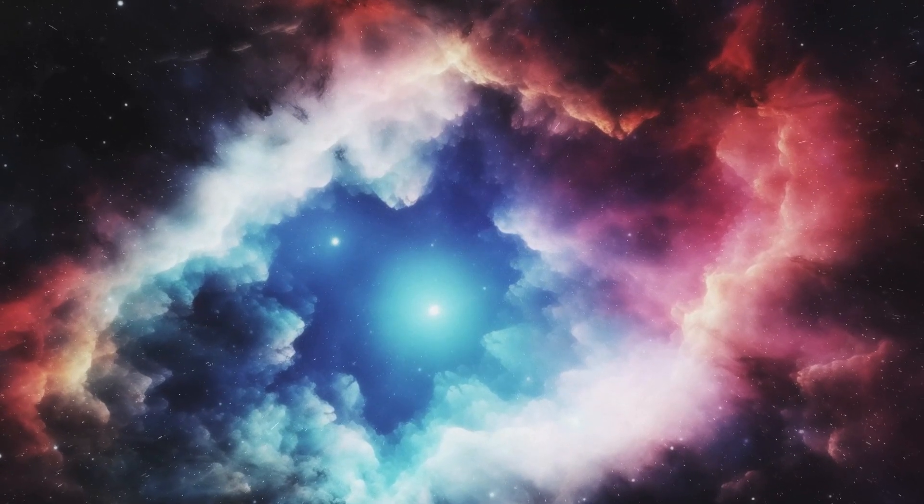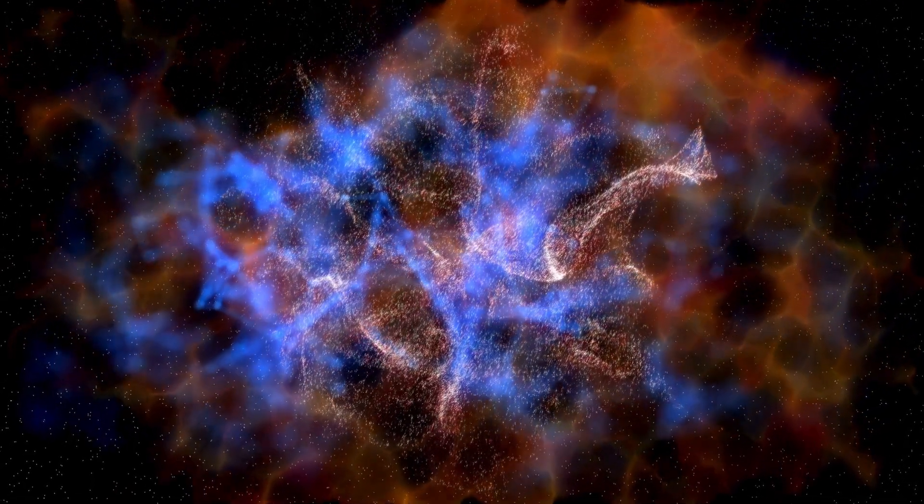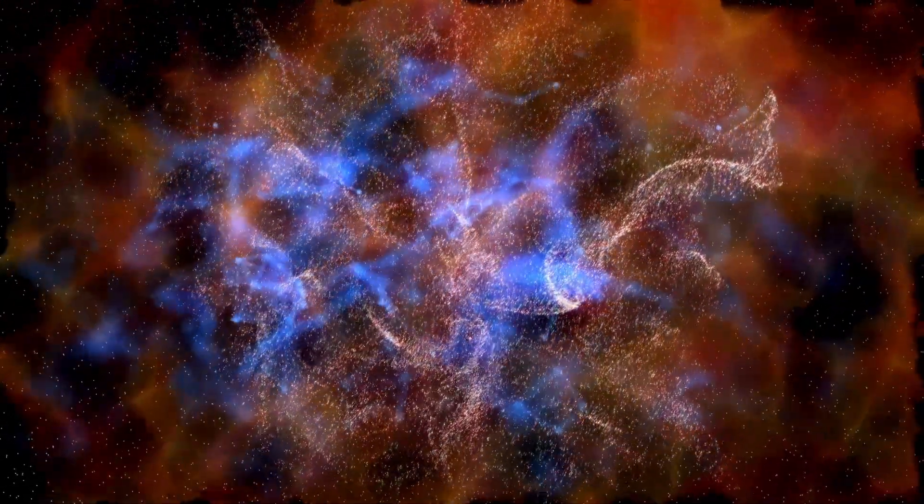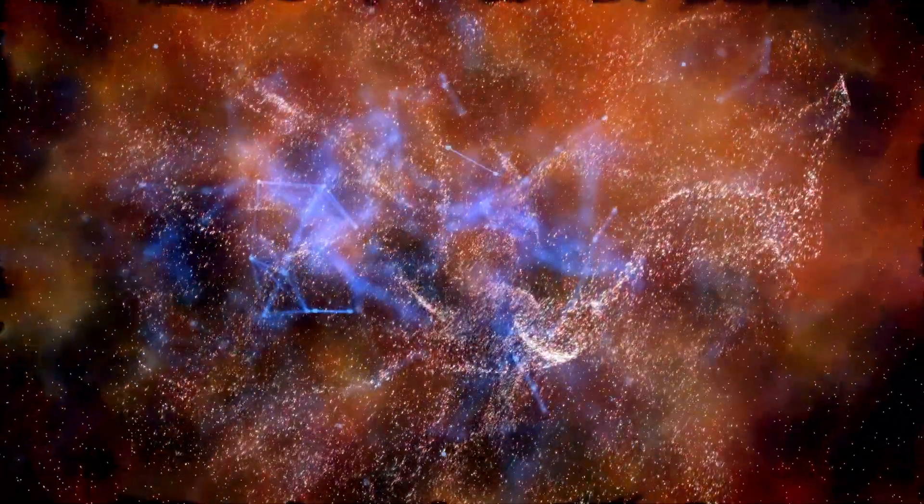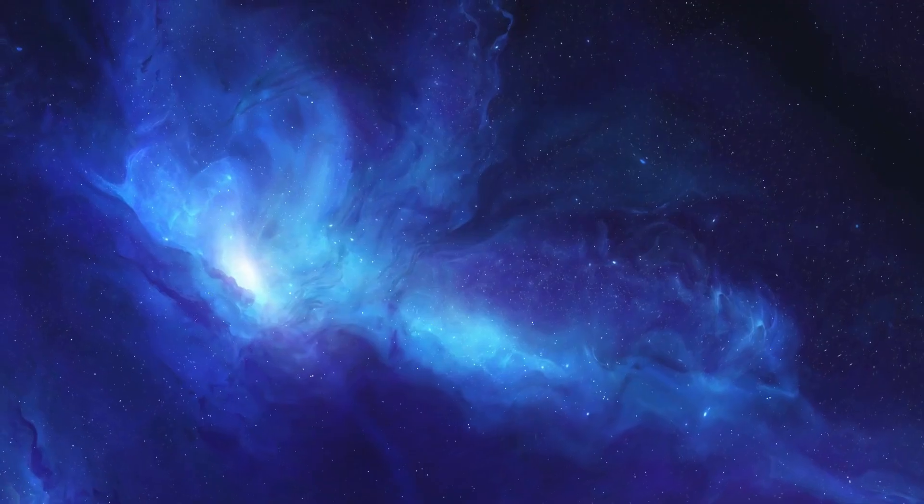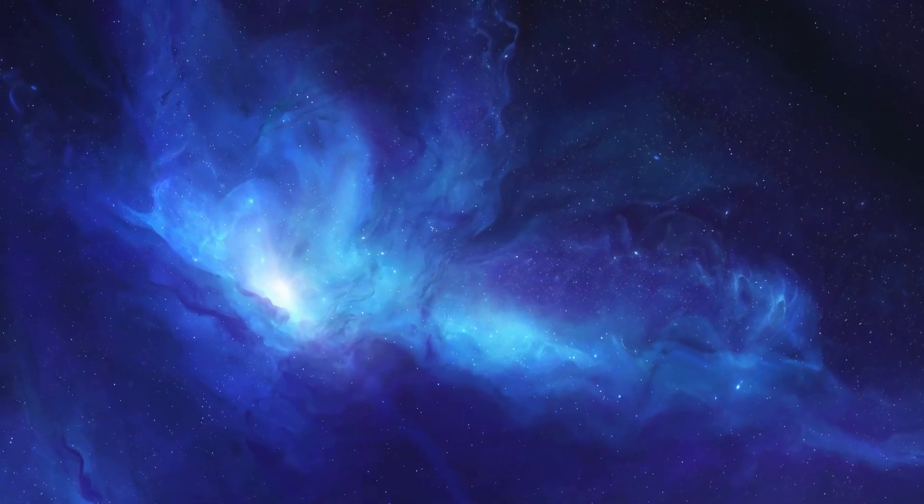According to standard models, the first stars began to shine between 200 and 300 million years after the Big Bang, marking the end of the Dark Age. This was when the first radiant objects grouped together to form complex structures. However, the rapid development of these galaxies remains a persistent mystery.